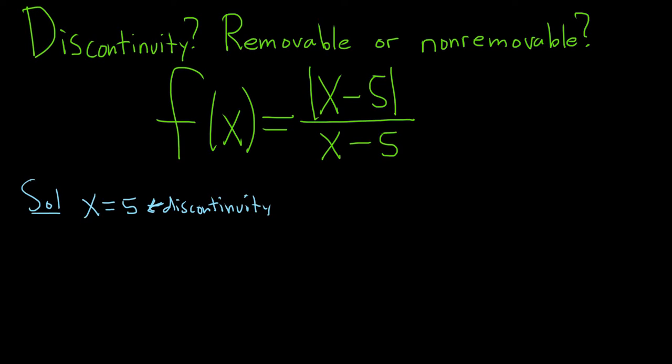Whenever you had a rational function, holes were removable. Whenever you have a vertical asymptote, that's non-removable. In this case we have possibly neither of those. It's not a rational function, and this is actually not going to be a vertical asymptote. So we have to use something a little more powerful to do this problem.